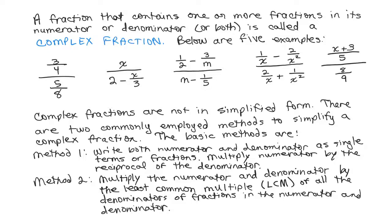you don't need to have it in the form as the very first example up here. Instead, to simplify the complex fraction, the first step would be to multiply the numerator and denominator by the least common multiple of all the denominators of all the fractions in the numerator and the denominator.